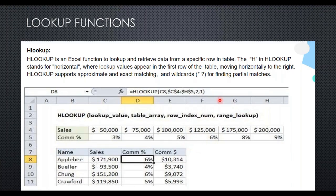I write one or TRUE as the last entry, meaning approximate match. I don't find the exact value 171,900 in the table, so Excel finds the previous value closest to it and returns the corresponding commission percentage. This is the difference between 0/FALSE (exact match) and 1/TRUE (approximate match) in the last entry.